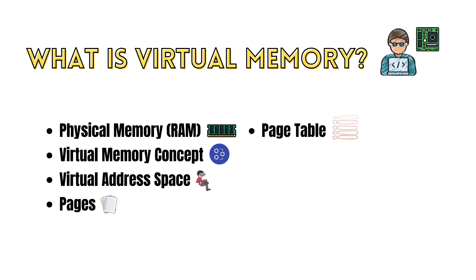The operating system uses page tables to map virtual addresses to physical addresses. When a process accesses data in its virtual address space, the page table is consulted to determine whether the corresponding page is in RAM or on disk.